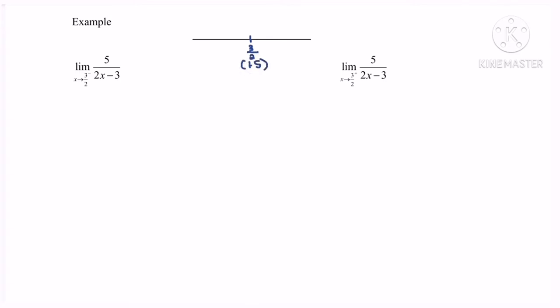I'm going to suggest a value from the left approaching 3/2, which will be 1.4999, and from the right it will be 1.5001.